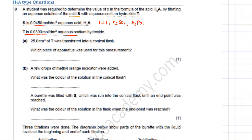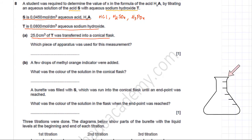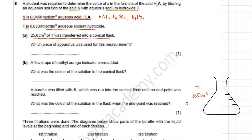T is 0.08 mol per dm³ of aqueous sodium hydroxide. The first part of the question states that 25 cm³ of T is transferred into a conical flask. So here is my conical flask, and I'm going to put 25 cm³ of T — which is 0.08 mol per dm³ of NaOH — into it.